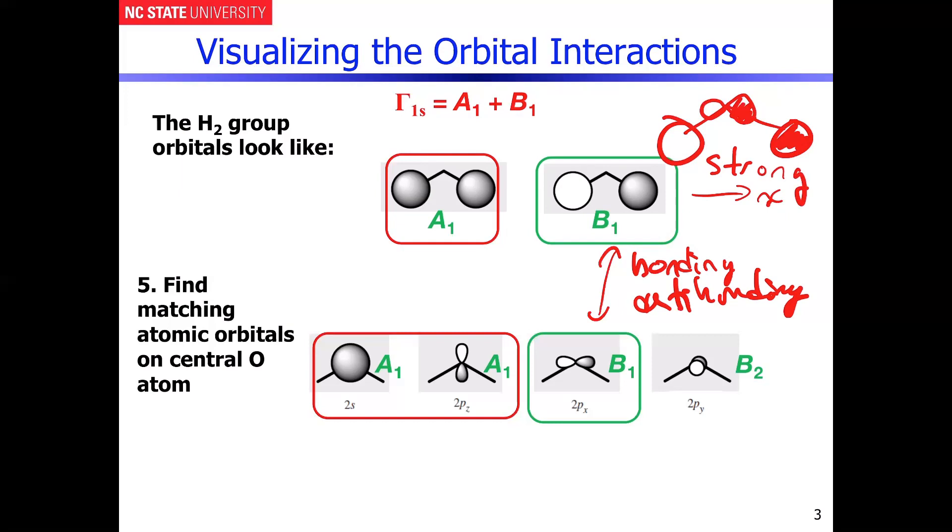If you kind of go back to the combination we had here, where we have the A1 hydrogen group orbital with the Pz orbital from oxygen, if you kind of see the way that this is going to be portrayed, it winds up being similar but not the same as what you saw above.